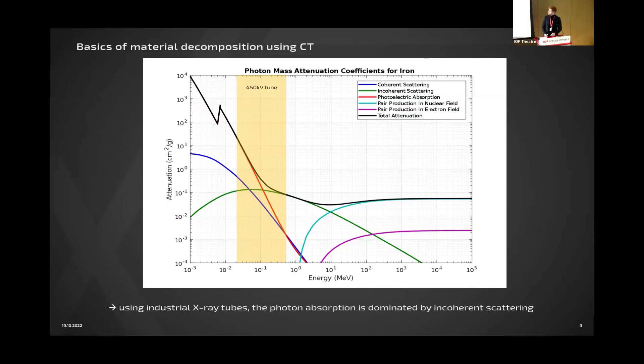You've already seen some kind of this plot. This is for iron, the attenuation. The most interesting part is this yellow area here. This is where a typical 450 kilovolt tube from our industrial use case is operating, and the peak photons, the most signal-dominating photons, are there.